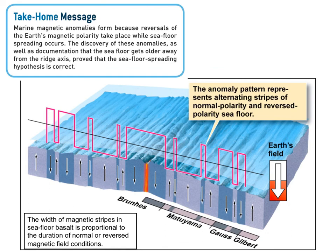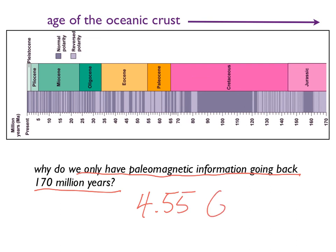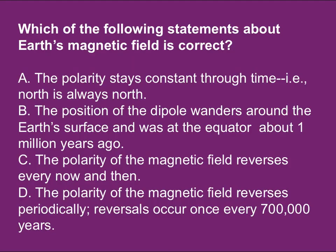Here's one of the take-home messages from your text — I recommend thumbing through the assigned chapters and at a minimum reading these take-home messages; they do a nice job describing the most important summary points of each subsection. A thought question to consider: why do we only have paleomagnetic information going back about 170 million years? You know the Earth is about 4.55 billion years old — so why is the paleomagnetic record of the seafloor limited to only 170 million years?